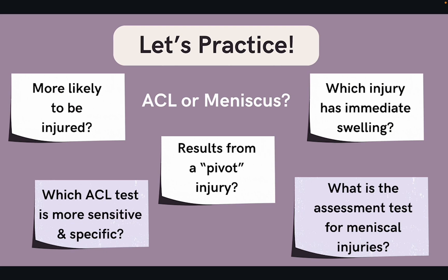Let's do a quick review of what we learned. Between the ACL and the meniscus, which one is most likely to be injured? The ACL. Which one has a common mechanism of injury from pivoting? ACL again. A meniscus is usually injured with what kind of motion? Twisting. Which type of injury has immediate swelling? An ACL injury. With ACL injuries, is the Lachman test or anterior drawer test more sensitive and specific? The Lachman test. And what is the name of the assessment test for meniscal injuries? The McMurray test. Nice job!